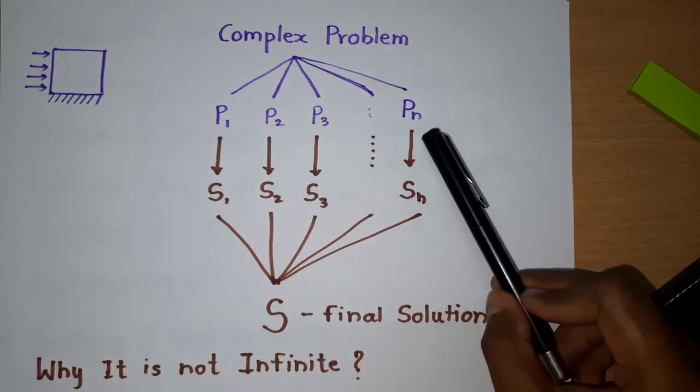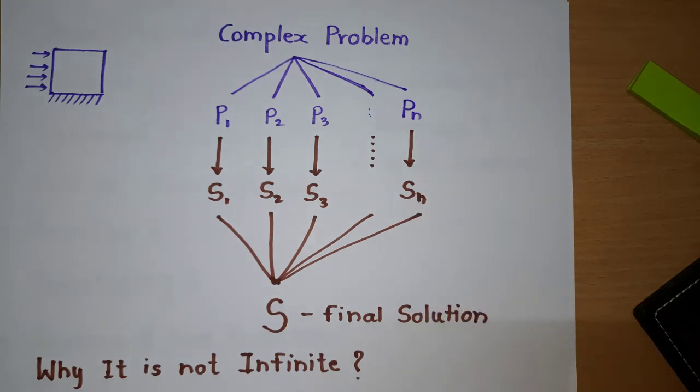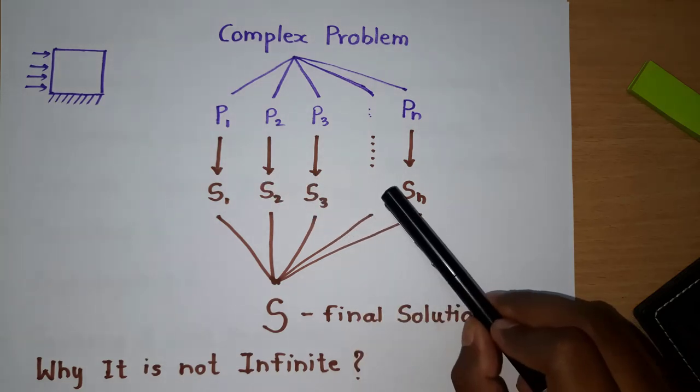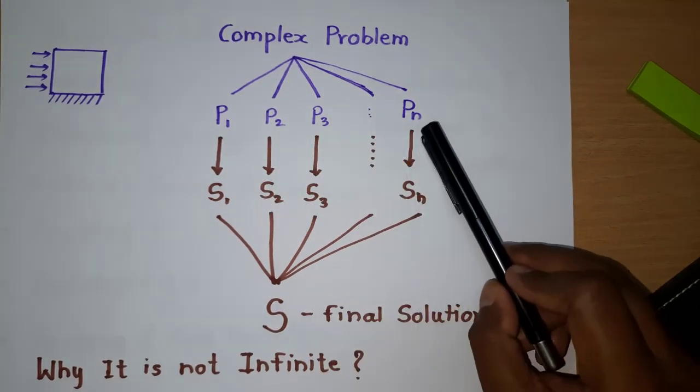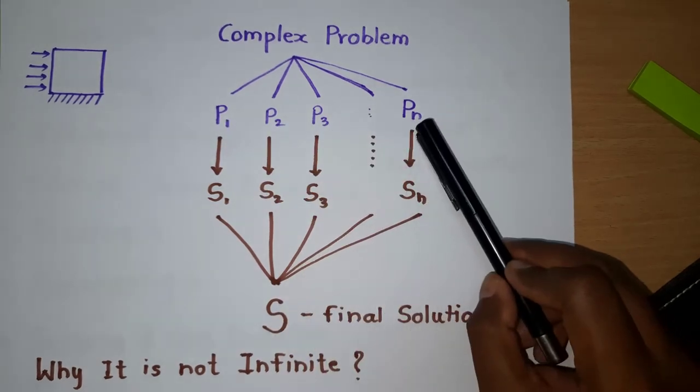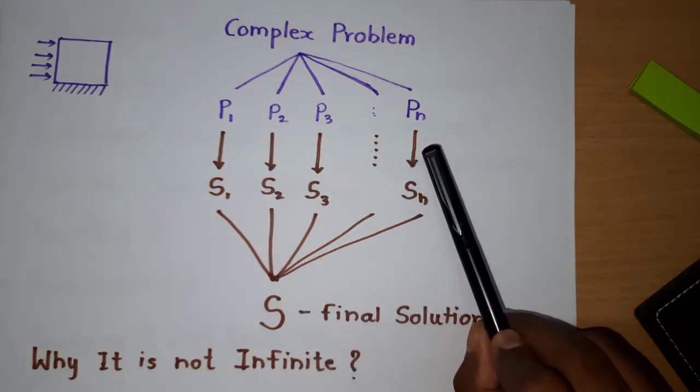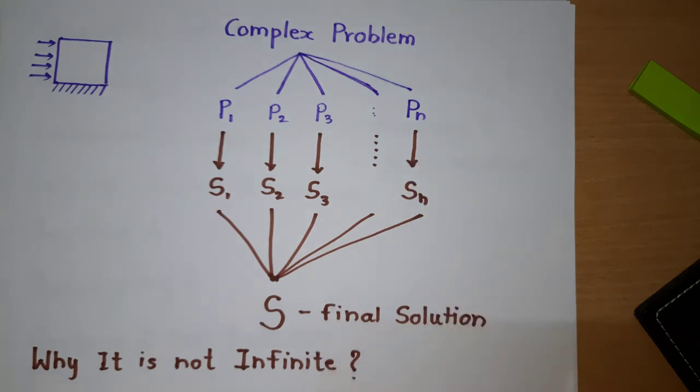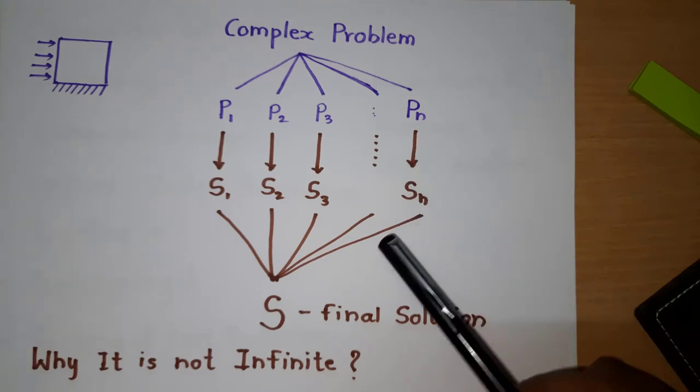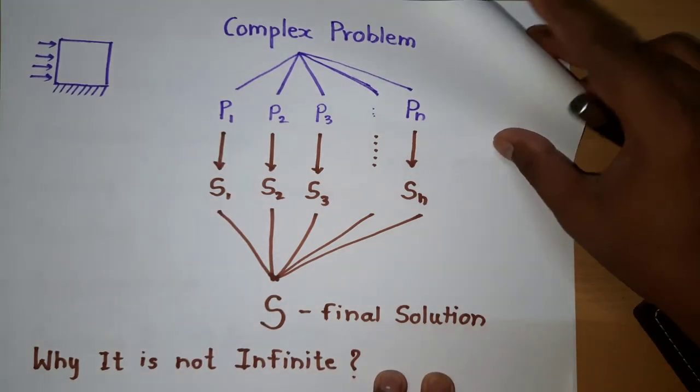Now, when you come to finite element analysis, by the name you can ask, why it is not infinite? Why it is not infinite analysis? If you see this structure diagram, all the problems are divided into n number of problems. So these are called the elements, number of elements. We will see that in a later video. These are finite number of problems, that's why it is called finite element analysis. In any problem, we always know how many elements are there and how many nodes are there. We will get the solution and that's why it is called finite element analysis.